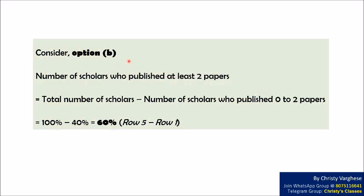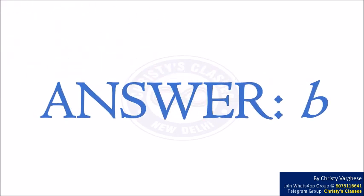Now consider option B, which tells that 60% of the scholars published at least two papers. Number of scholars who published at least two papers equals total number of scholars minus number of scholars who published zero to two papers. This equals 100% minus 40%, which equals 60%. The statement holds and hence option B is the right answer.